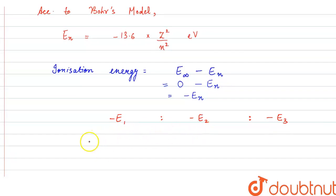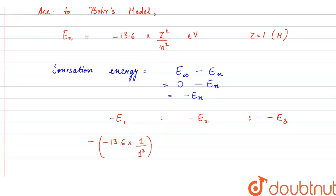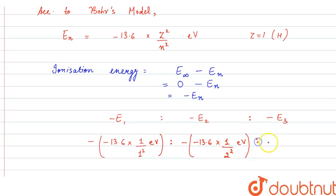We will put the values now. E1 is equal to minus 13.6 into Z squared — Z is equal to 1 for hydrogen — divided by n squared, so for the first orbit n squared is 1 squared. For E2, n is equal to 2, so n squared is 2 squared. For E3, n is equal to 3, so n squared is 3 squared. All values are in electron volt.